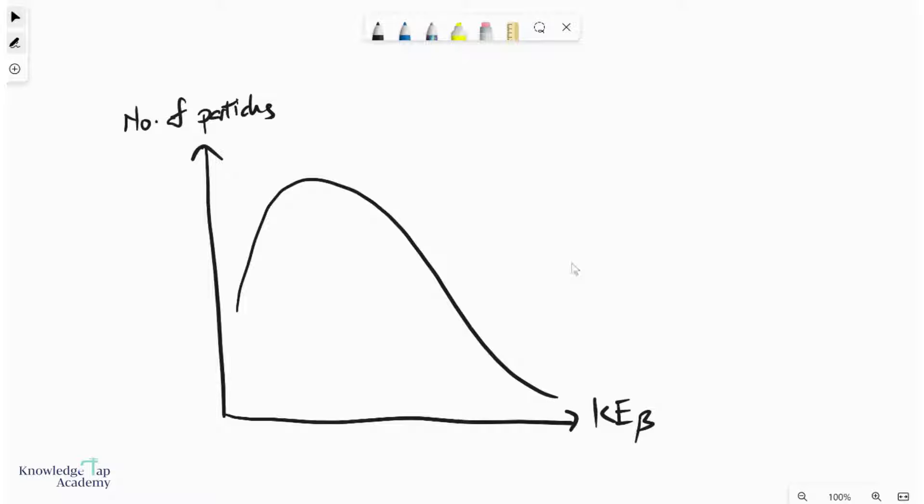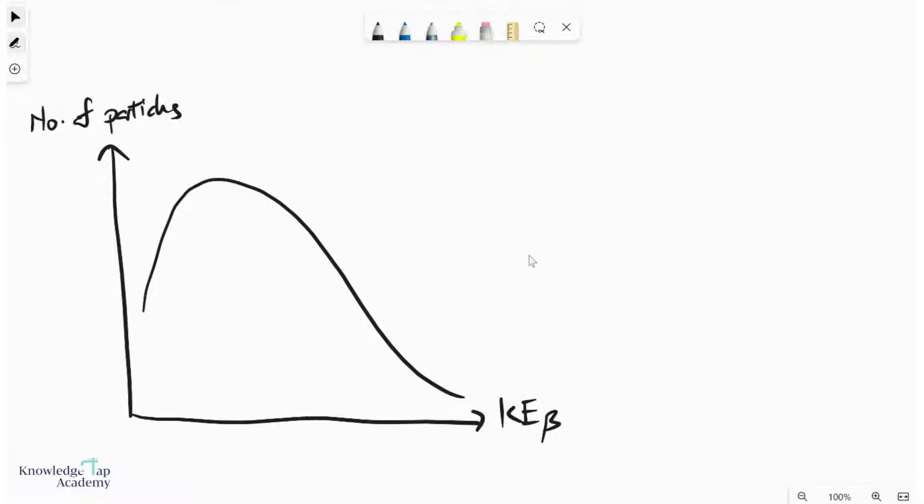So what this presented to scientists was that it appeared to be some kind of contradiction to both the conservation of linear momentum and the conservation of energy, which is very puzzling because these are two very powerful laws in physics.